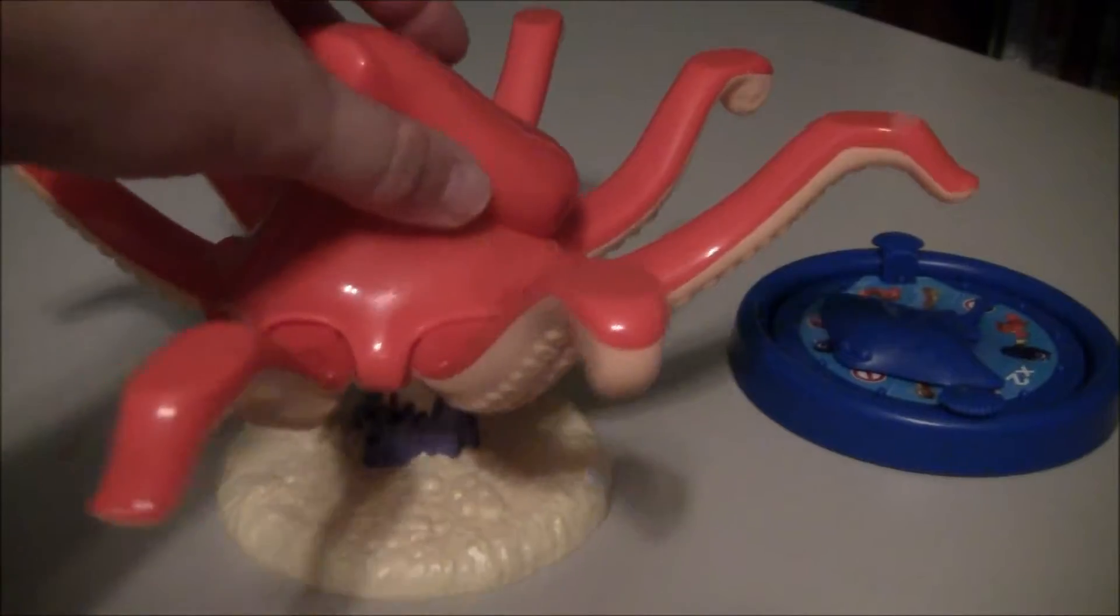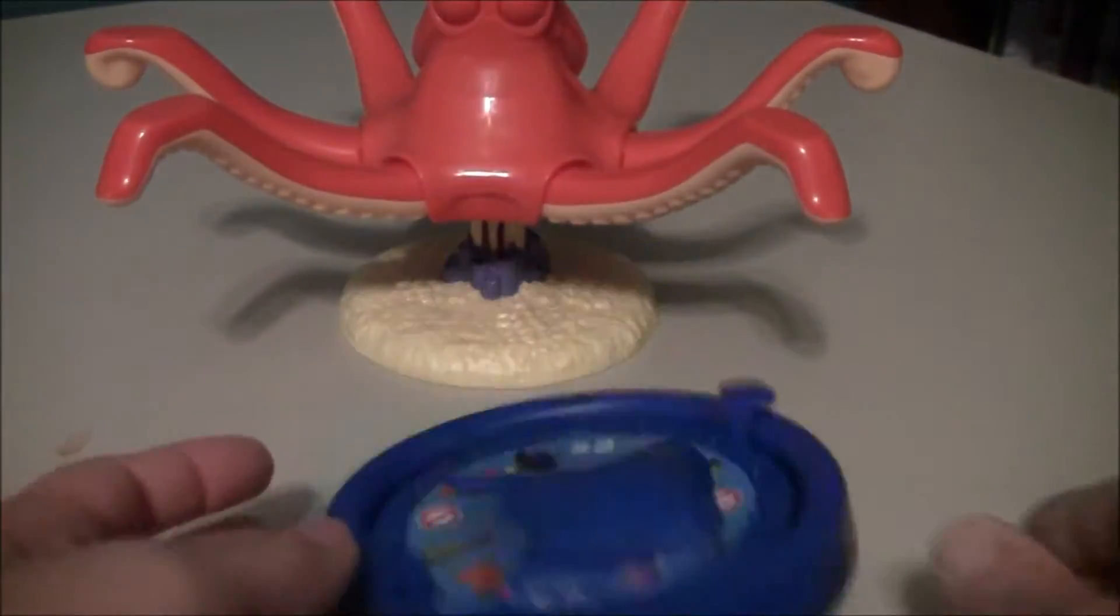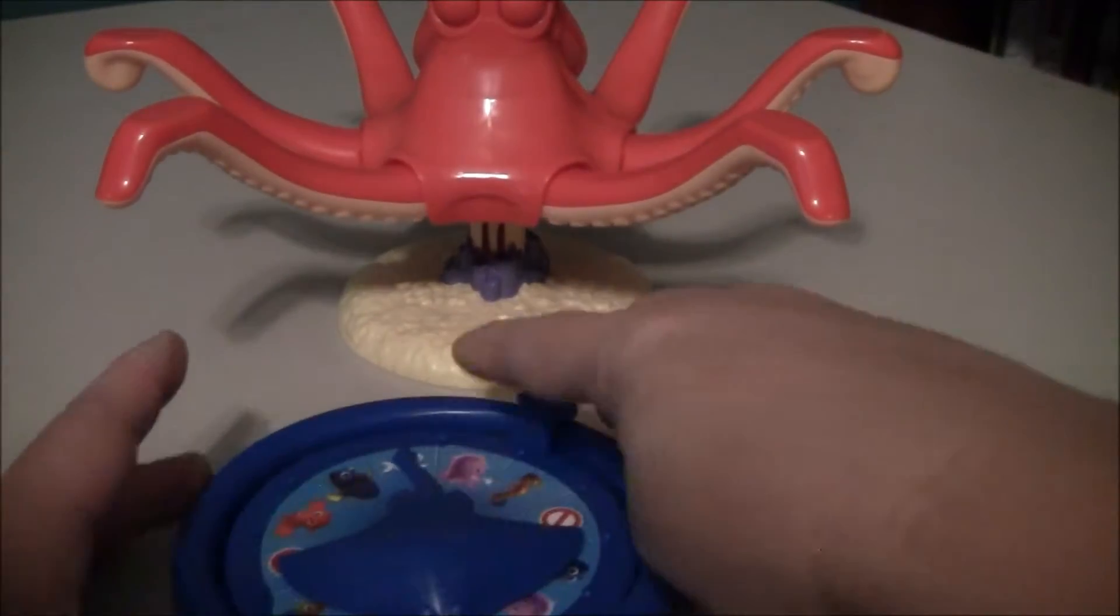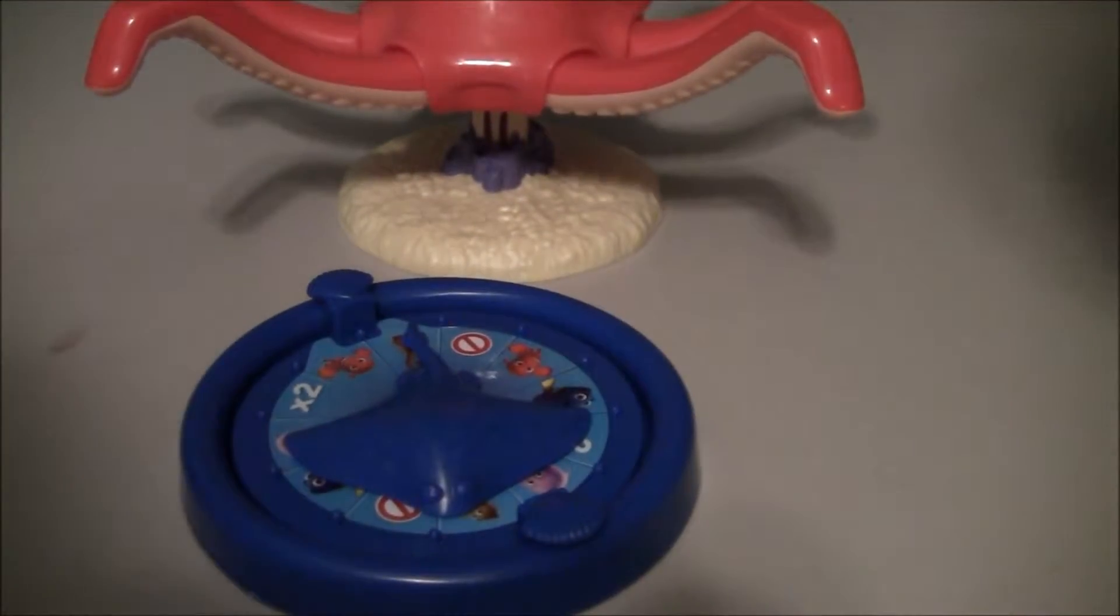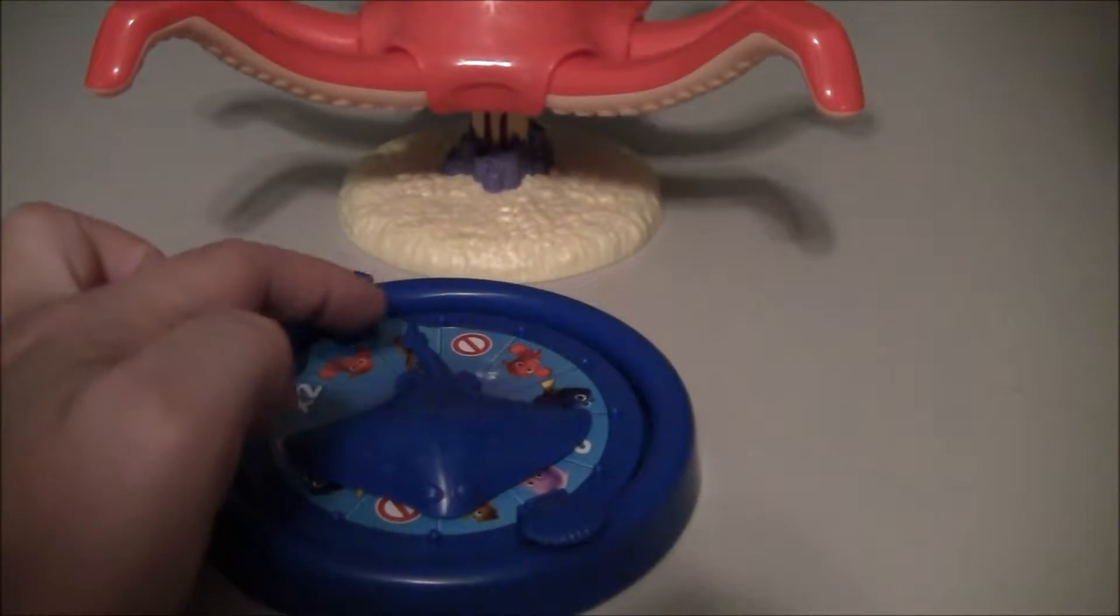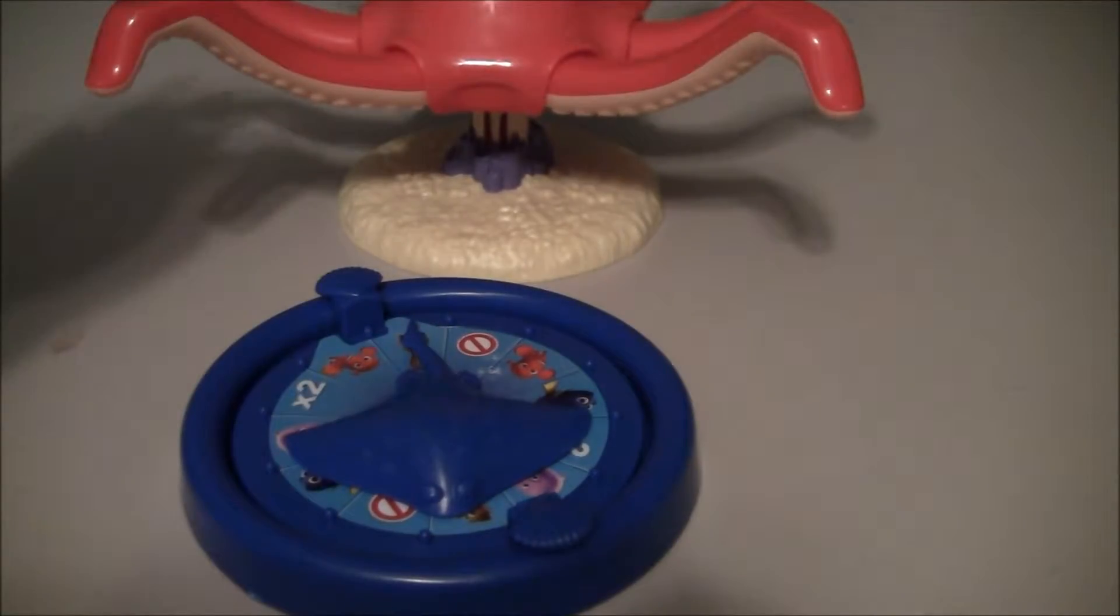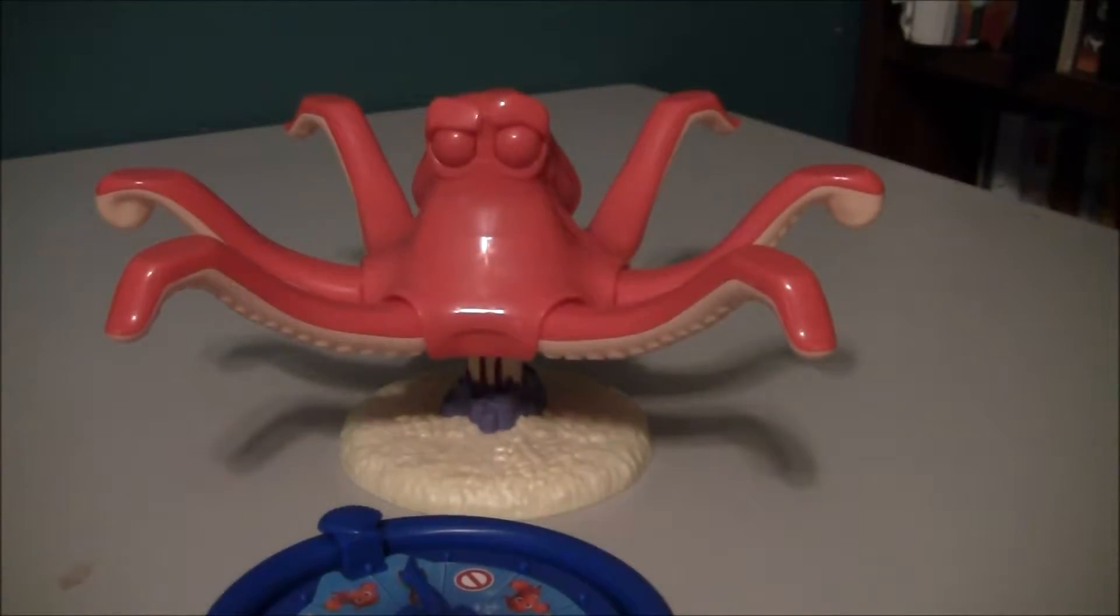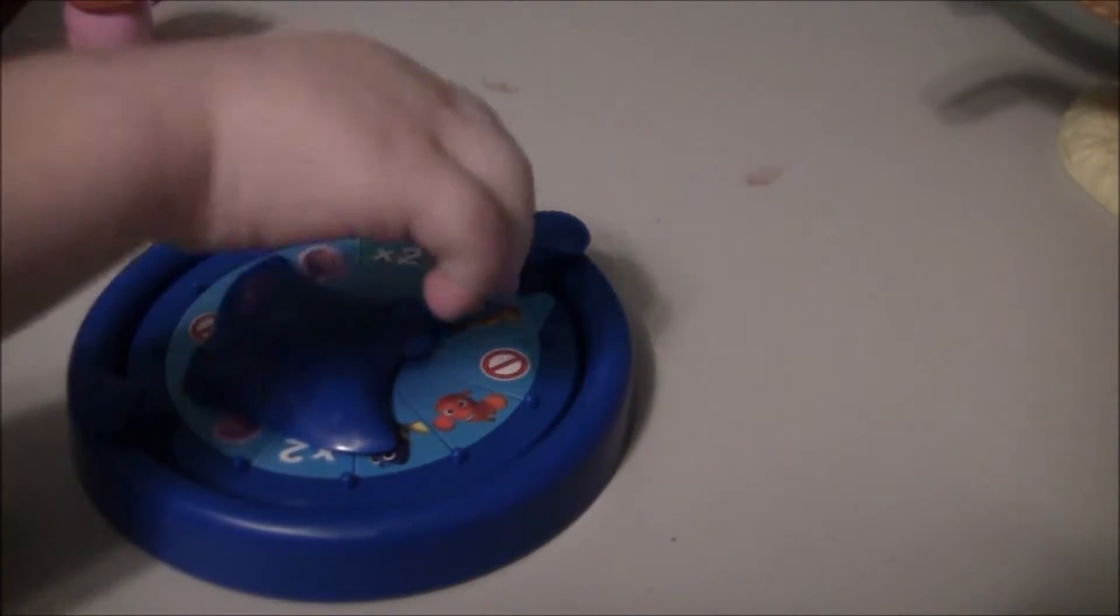And it says the youngest player gets to spin first. And Toy Dot's the youngest. So how you spin is you lay it down flat, you spin the shell, and whatever the tail points to, you have to put it on one of the arms. So it's pointing to the seahorse. So Toy Dot has to try and balance one of the seahorses on the octopus legs without waking Hank up.